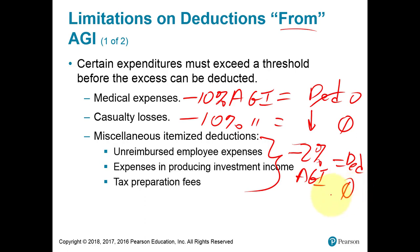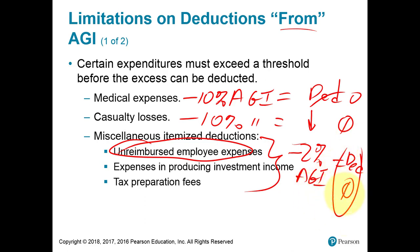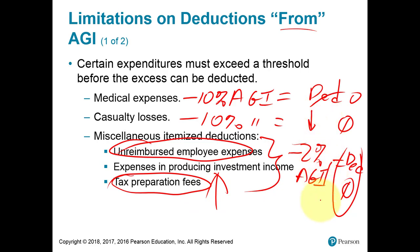Some people will say, 'I pay union dues, I pay for working tools' — well, that's in this miscellaneous category. Is it more than 2% of your income? If not, probably nothing of that is deductible. The tax prep fee is technically tax deductible, but in reality, if your miscellaneous expenses aren't really big and your AGI isn't really small, you'll probably get nothing here. For most people it's going to be zero.